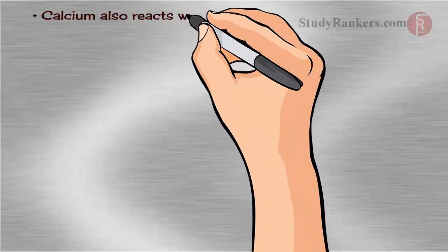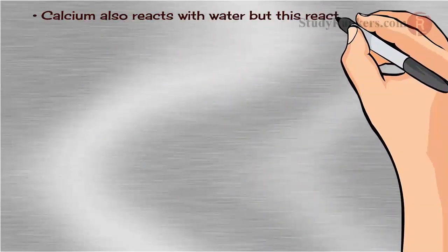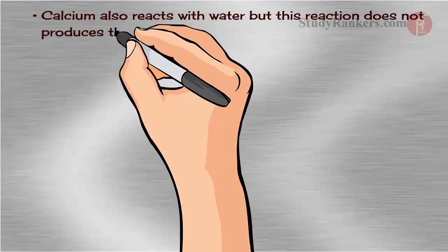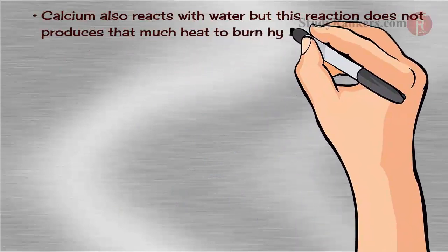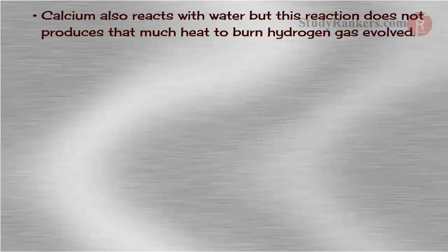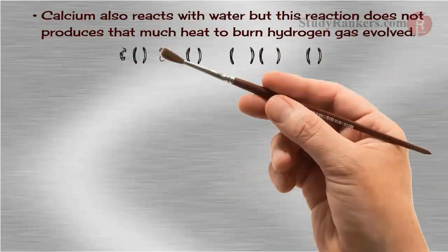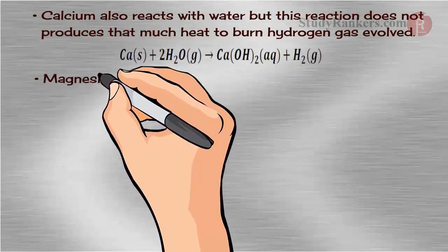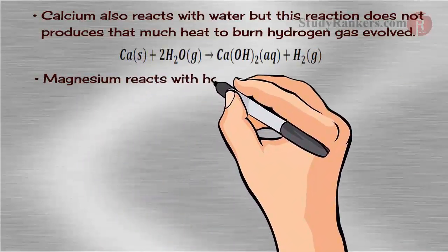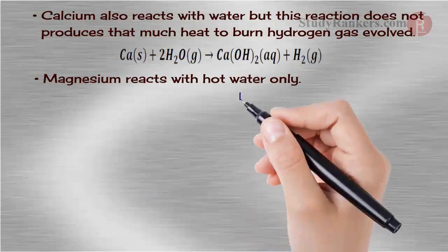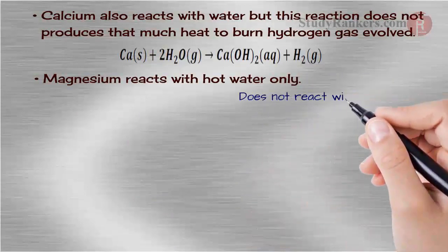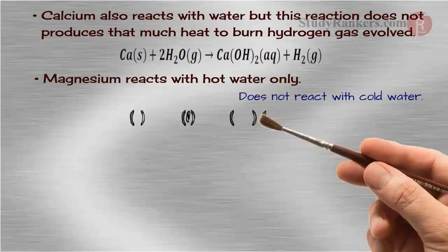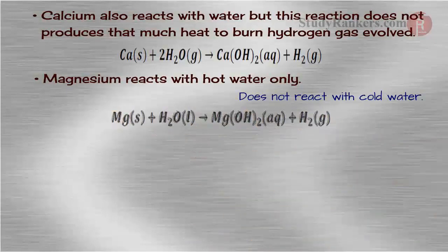Calcium also reacts with water, but this reaction does not produce that much heat to burn the hydrogen gas evolved. When Ca reacts with 2H2O, that will give Ca(OH)2 plus H2. Magnesium reacts with hot water only. It does not react with cold water. When Mg reacts with H2O, it will give Mg(OH)2 plus H2.